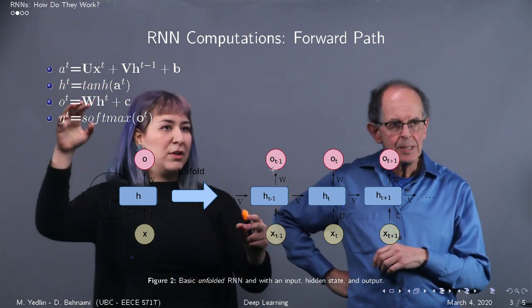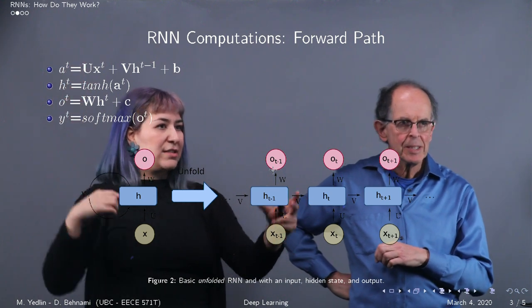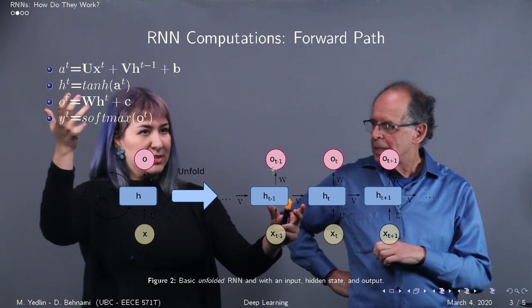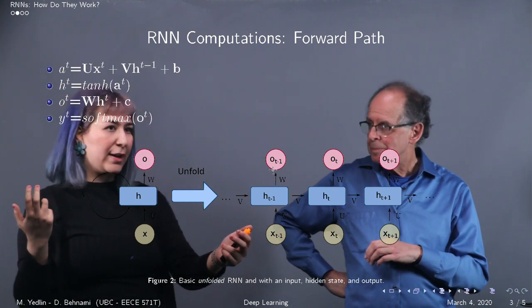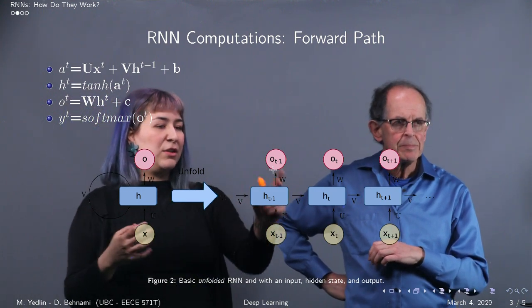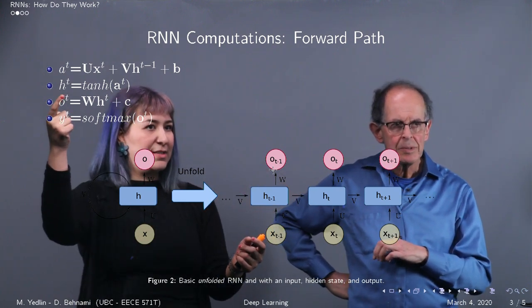And then in order to calculate the hidden state, you have to apply, let's call that a. You have to apply some activation. In this case, we look at tanh, which is a very common activation for RNNs. So you apply, you essentially feed your a of t into the activation function. And that gives you the hidden state.